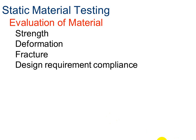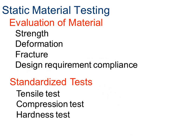When we do this, what we're looking for is the strength of the material — whether it deforms when we put it under pressure, whether it wants to change shape, or break and fracture, or whether the design meets compliance requirements. There are three standard tests we do to test material: a tensile test, a compression test, and a hardness test.